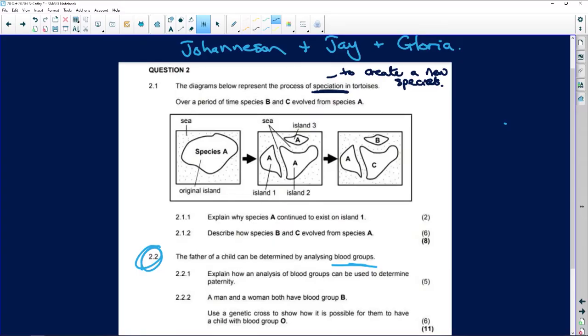Species B and C evolved from species A, so A was the number one species, and then A split. The sea split this little island into island one, island two, and island three.